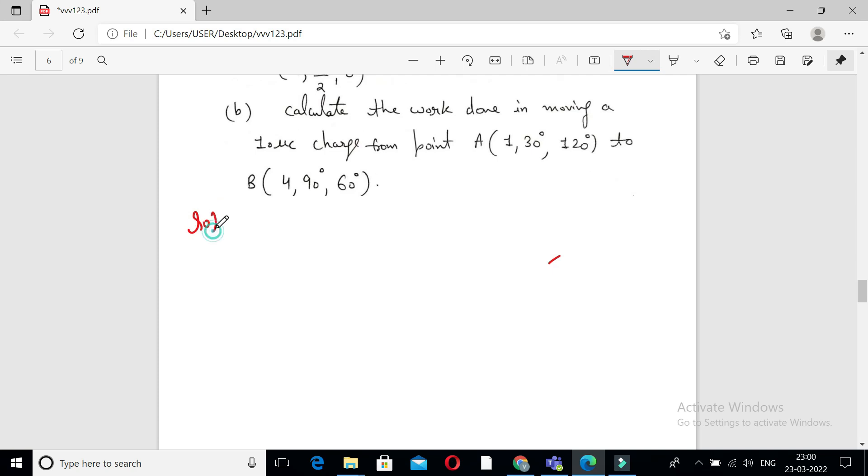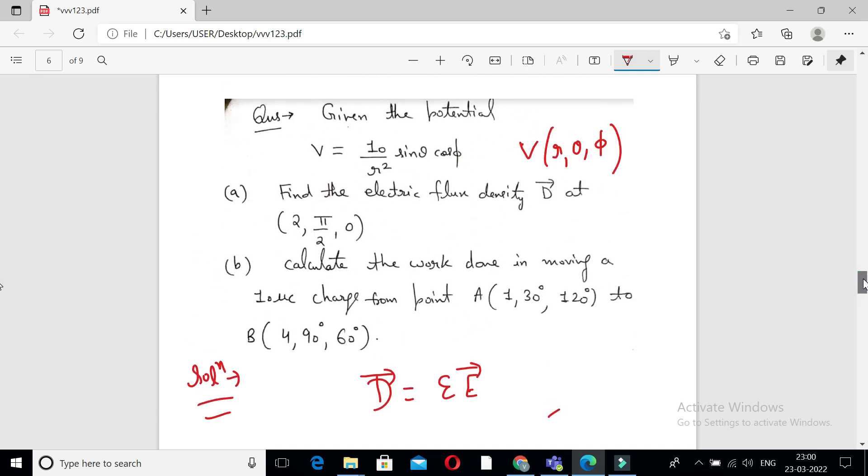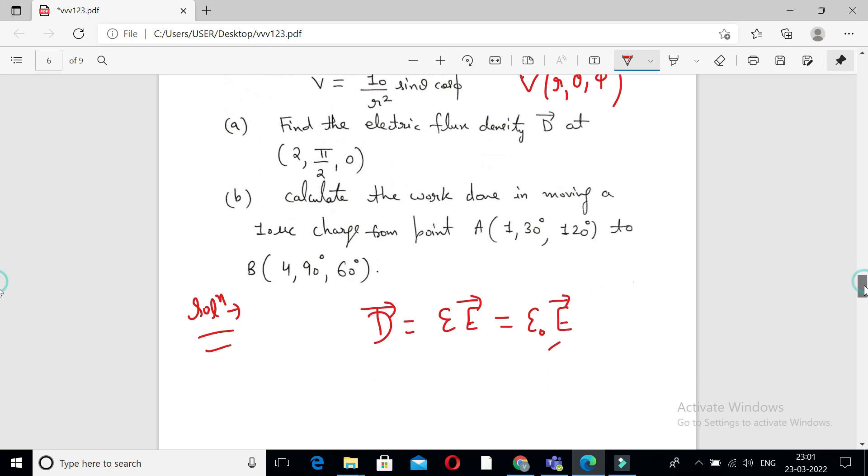We know vector electric flux density D is equal to epsilon naught into E vector. Here it is not given the value of epsilon R, so we assume epsilon naught into E vector for free space. We know E vector is related to electric potential, negative del V. And we know del in spherical coordinate system.